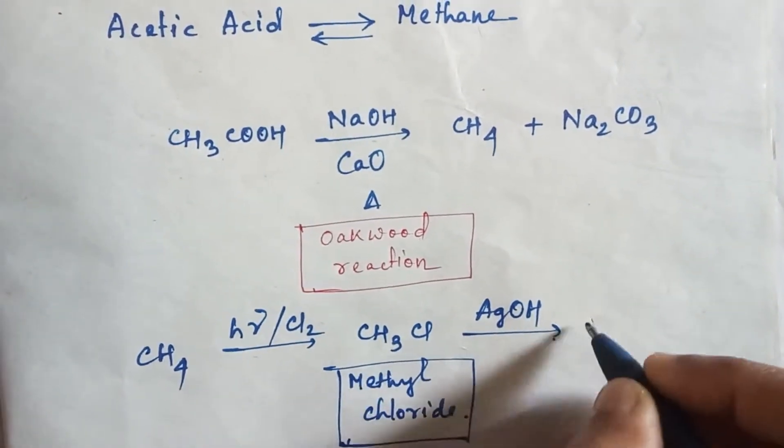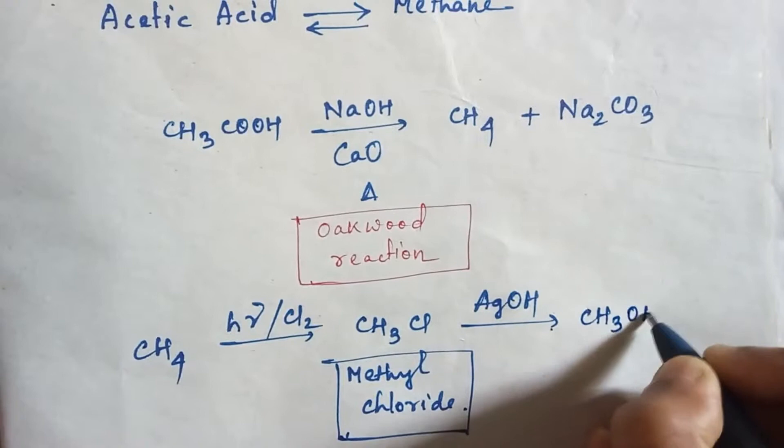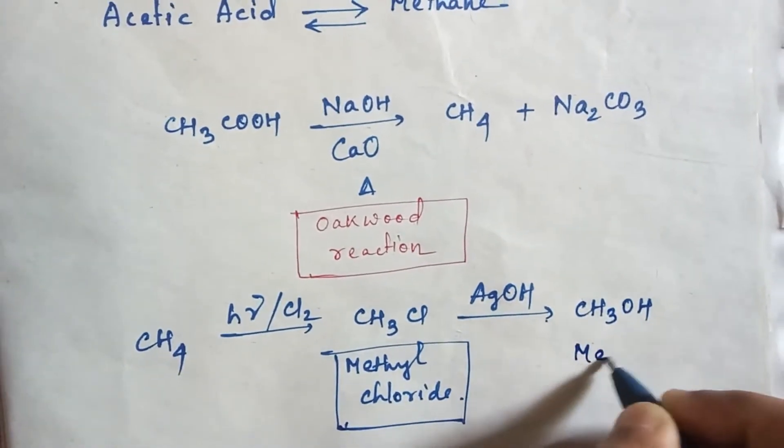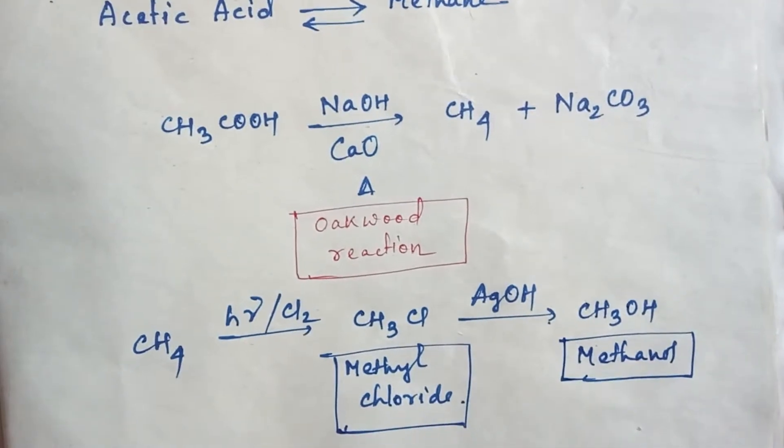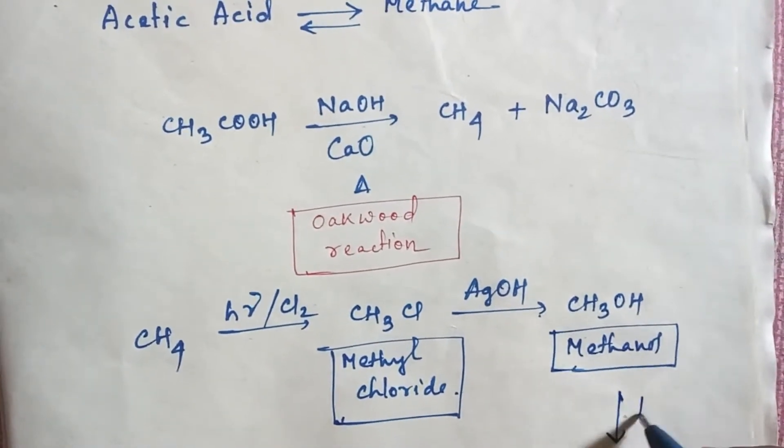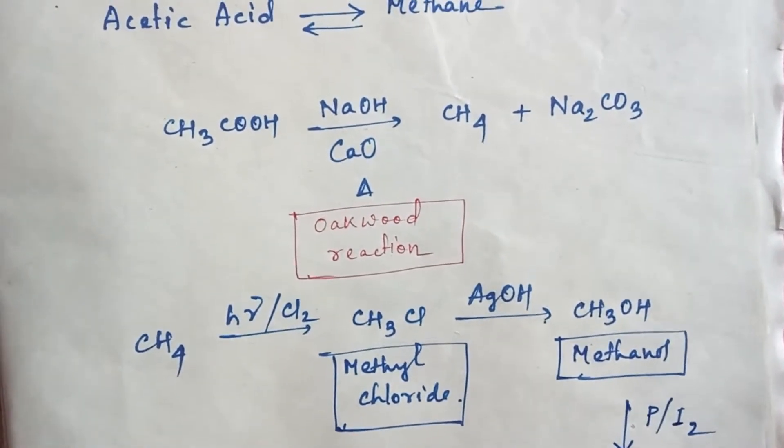In methyl chloride, if you add silver hydroxide, then OH will be included in this product and you will get methanol.